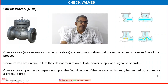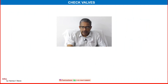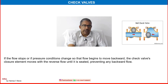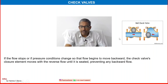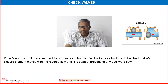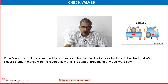The upstream either pump or higher pressure creates the flow. If the flow stops or pressure conditions change and the flow begins to move backward, the check valve closure element moves with the reverse flow until it is seated, preventing any backward flow. The one directional flow lifts the closing element and the flow goes through; when downstream pressure increases and flow reverses, the closure element blocks the path of flow and prevents backflow.